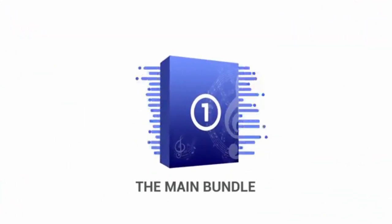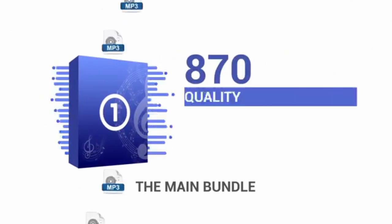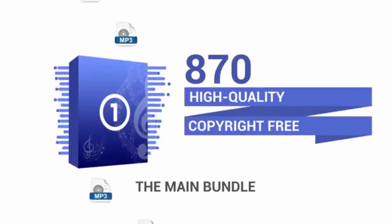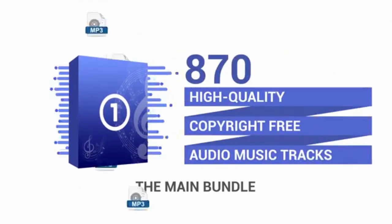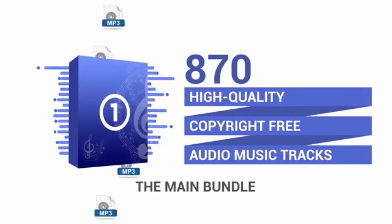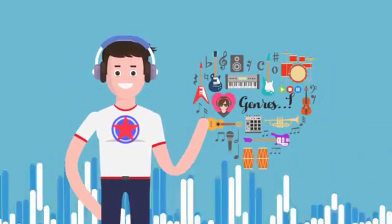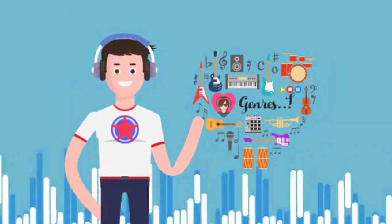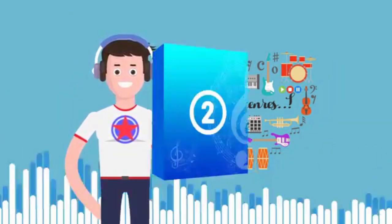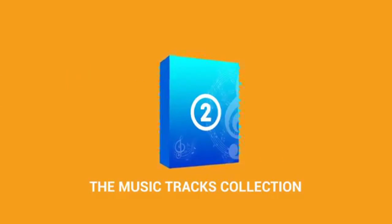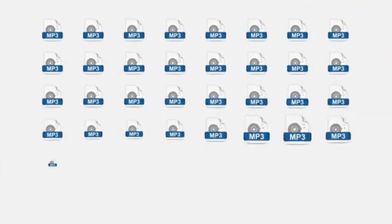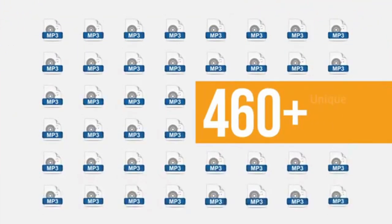Part 1: The main bundle includes over 870 high-quality copyright free audio music tracks. These amazing tracks come in an astonishing variety of genres. Part 2: The music tracks collection features 460 plus unique music tracks organized in over 50 different distinct music genres.